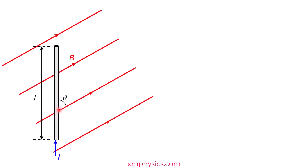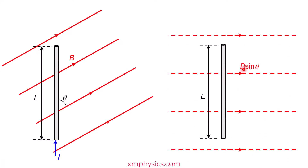So what if the conductor is placed not exactly perpendicular nor parallel to the magnetic field, like the case shown here? We resolve the magnetic field into a component perpendicular to the rod and a component parallel to the rod. The component that's perpendicular to the rod will be B sine theta, where theta is the angle between the conductor and the magnetic field. We can then calculate the magnetic force using BIL, but substitute in B sine theta, because we want the component that's perpendicular to the conductor. You end up with BIL sine theta.